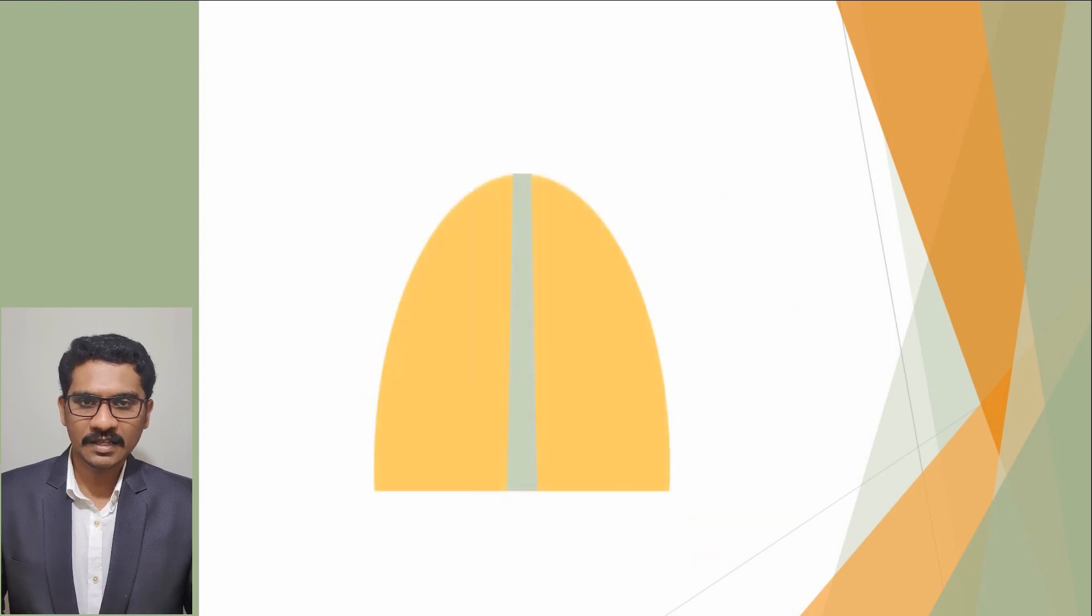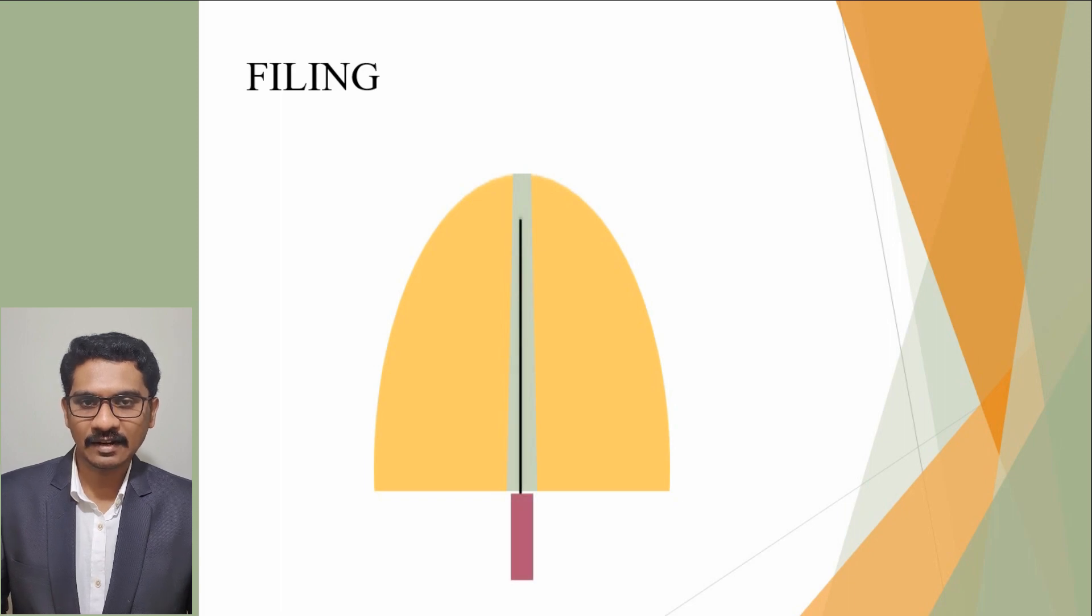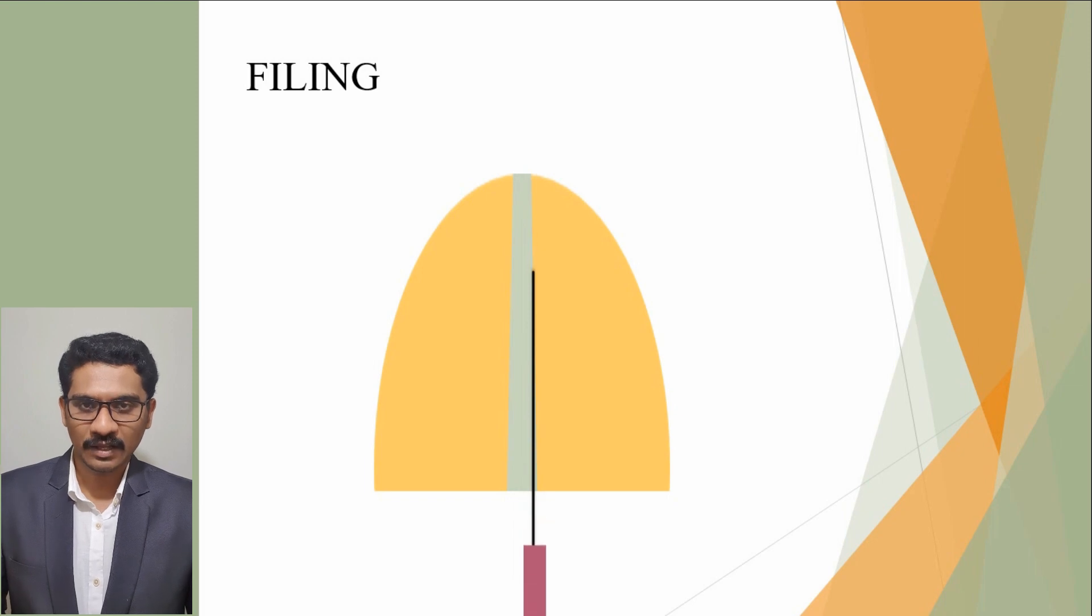Another motion similar to reaming is the filing motion. Filing is defined as placing the file into the canal and pressing it laterally while withdrawing it along the path of insertion to scrape the wall. There is very little rotation on the outward cutting stroke.